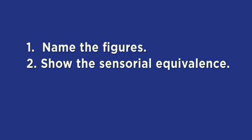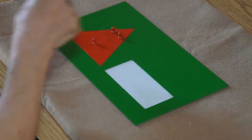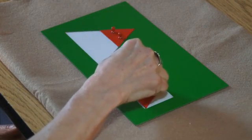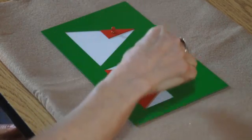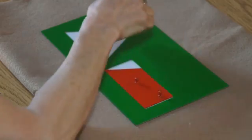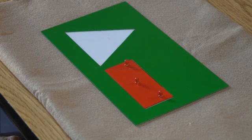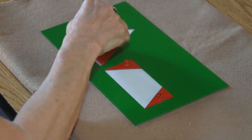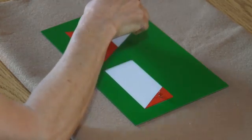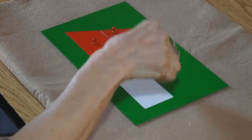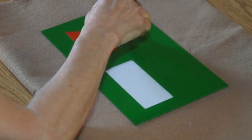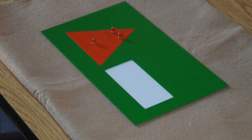Step two is showing the sensorial equivalence of the figures. The pieces of the triangle fill the frame of the rectangle. The pieces for the rectangle fill the frame of the triangle. That was step two.